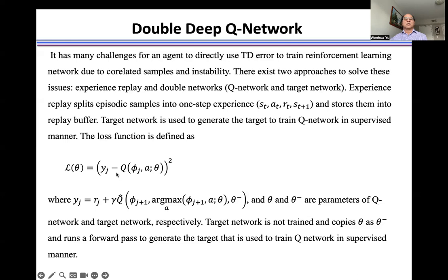To use a gradient descent method to train the model, we need to define the loss function. We train the Q-Network to find the optimal policy. The target network is used to generate the target. When we run it, we copy the parameters from the Q-Network to the target network.